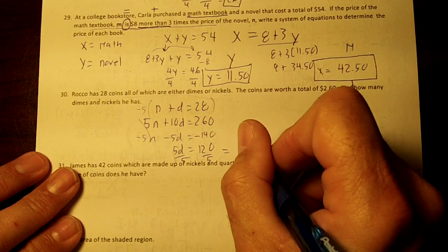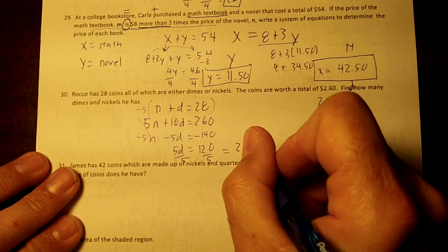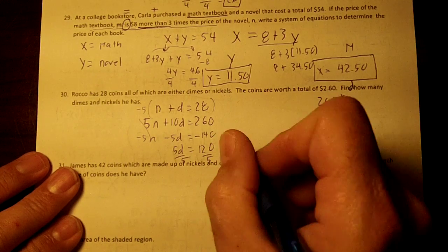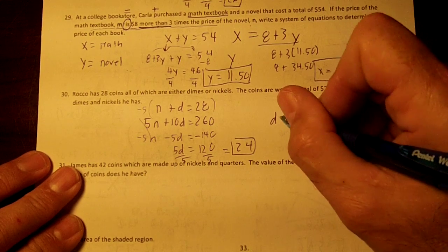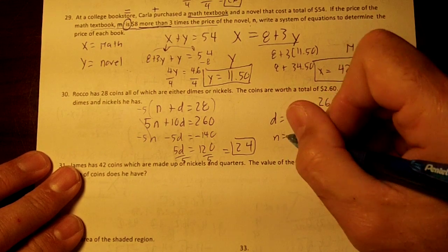And you would get 24. Okay, so he has 24 dimes. If he has 24 dimes, D equals 24, the nickels would be 4, wouldn't it?